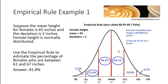You can visually see this because look at how much of this curve is taken up by women between 61 and 69 inches tall. Let's look at a specific question type you might see when using the empirical rule to estimate percentages. This question says: use the empirical rule to estimate the percentage of females who are between 61 and 67 inches. The only way we can do this is to know the mean and the standard deviation.